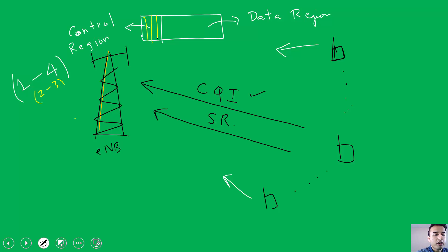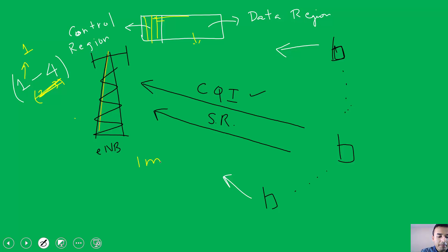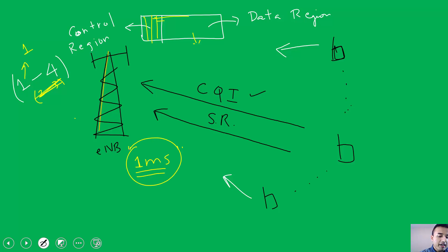Up to three dedicated OFDM symbols in each subframe can be used for the control region, with the rest allocated for the data region. If there are not enough users being scheduled, rather than two to three symbols, we can use just one OFDM symbol for control and the rest for data. This can be changed dynamically after every one millisecond, since in LTE scheduling takes place every millisecond. The scheduler can decide whether to allocate one, two, three, or four OFDM symbols for control.